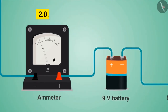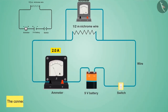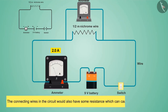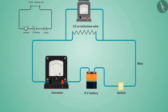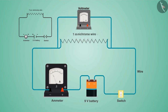We know that the connecting wires in the circuit would also have some resistance, which can cause a drop in voltage. But to understand the theory here, the drop in voltage is not taken into consideration. For this reason, only the potential difference that the battery is producing is taken into account.